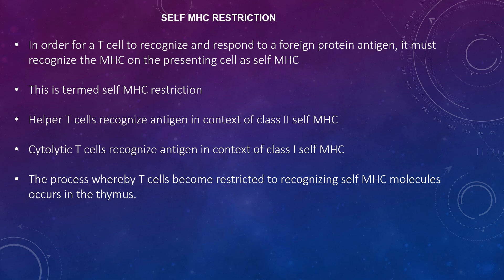Helper T cells recognise antigens in the context of class 2 self MHC. Cytolytic T cells recognise antigens in the context of class 1 self MHC. The process whereby T cells become restricted to recognising self MHC molecules occurs in the thymus.